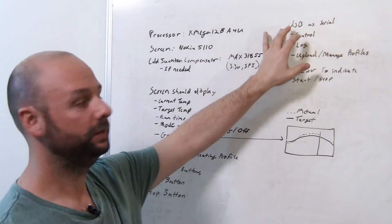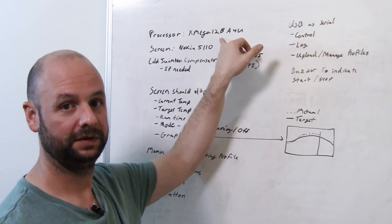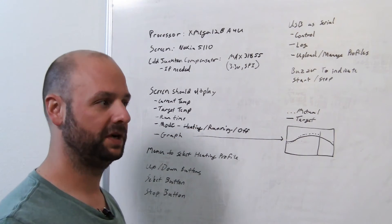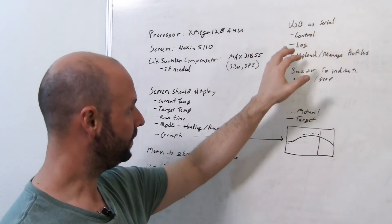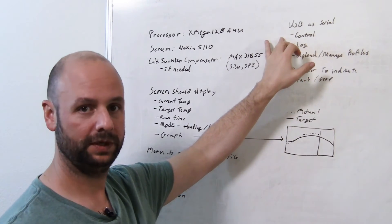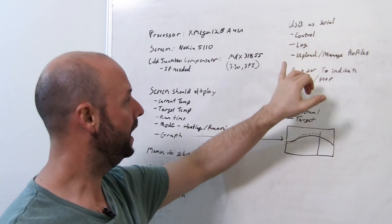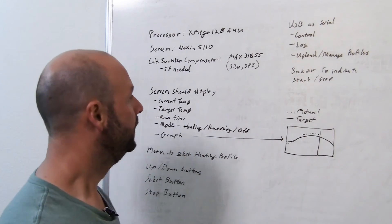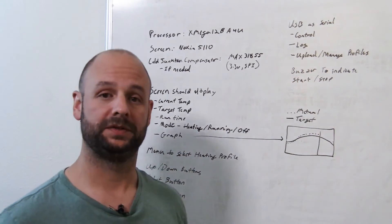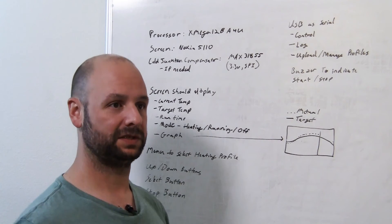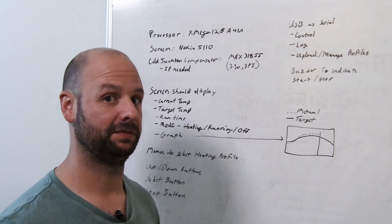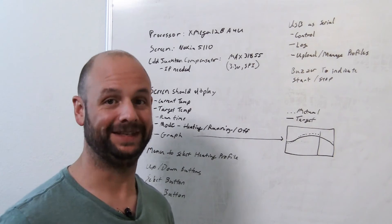For a USB which is built into the Xmega, another reason I want to use it, I just want to make it as a serial device, so the generic CDC drivers. I want to be able to control it in real time, log it, and then upload and manage the profiles, you know, delete them, whatever. I may also add a buzzer so that I can indicate things like start and stop for the entire run or some kind of air beep in case something goes wrong. That's pretty much it.